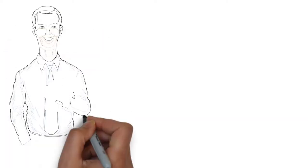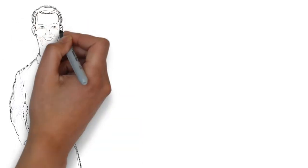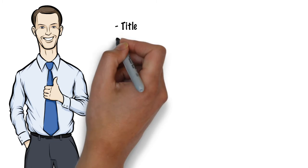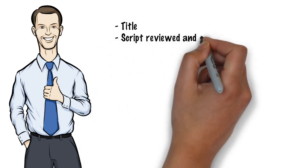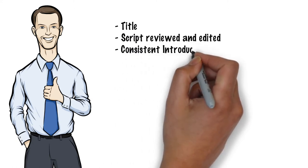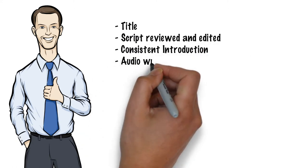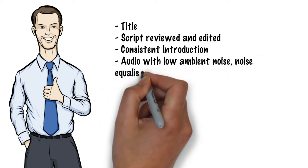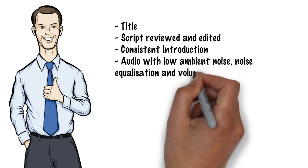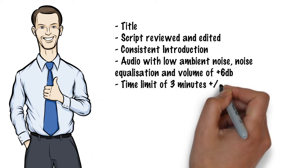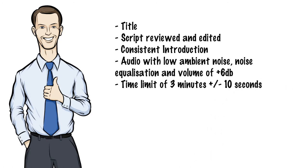These light bulb talks have a definition of done as well, including title, the script being reviewed and edited, a consistent introduction, the audio with low ambient noise, noise equalization, and volume of plus six decibels, a time limit of three minutes plus or minus ten seconds, the animation and the alignment of the audio to the video, the text in the animation being spell checked, a thumbnail image being published to YouTube and added to the playlist.